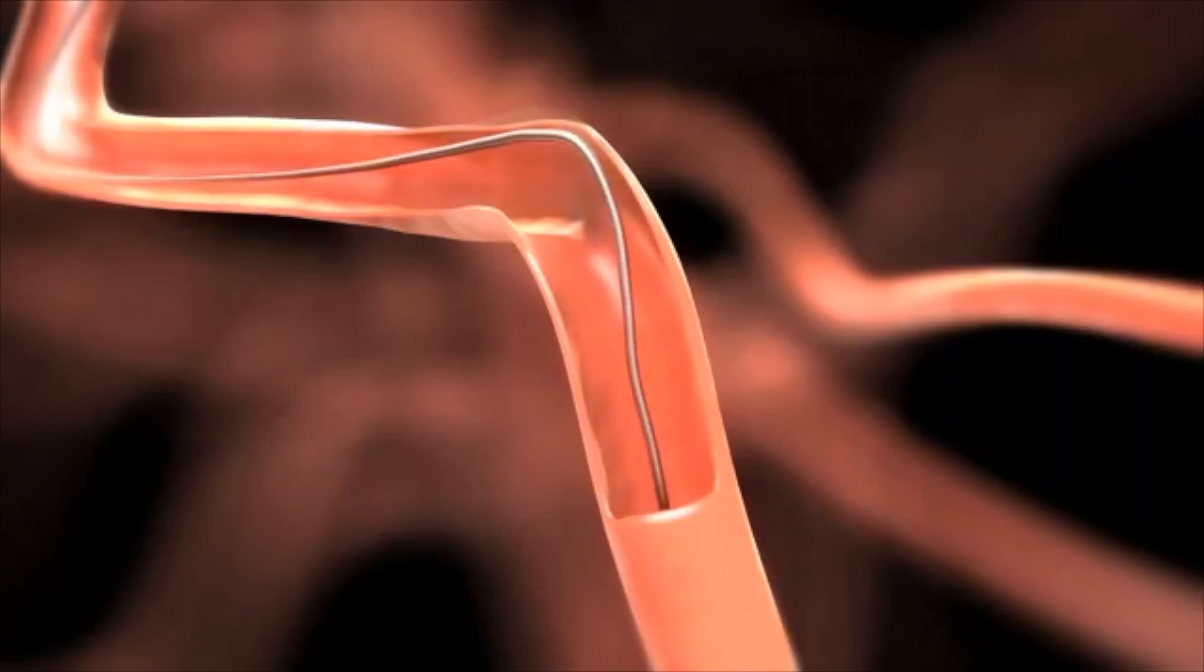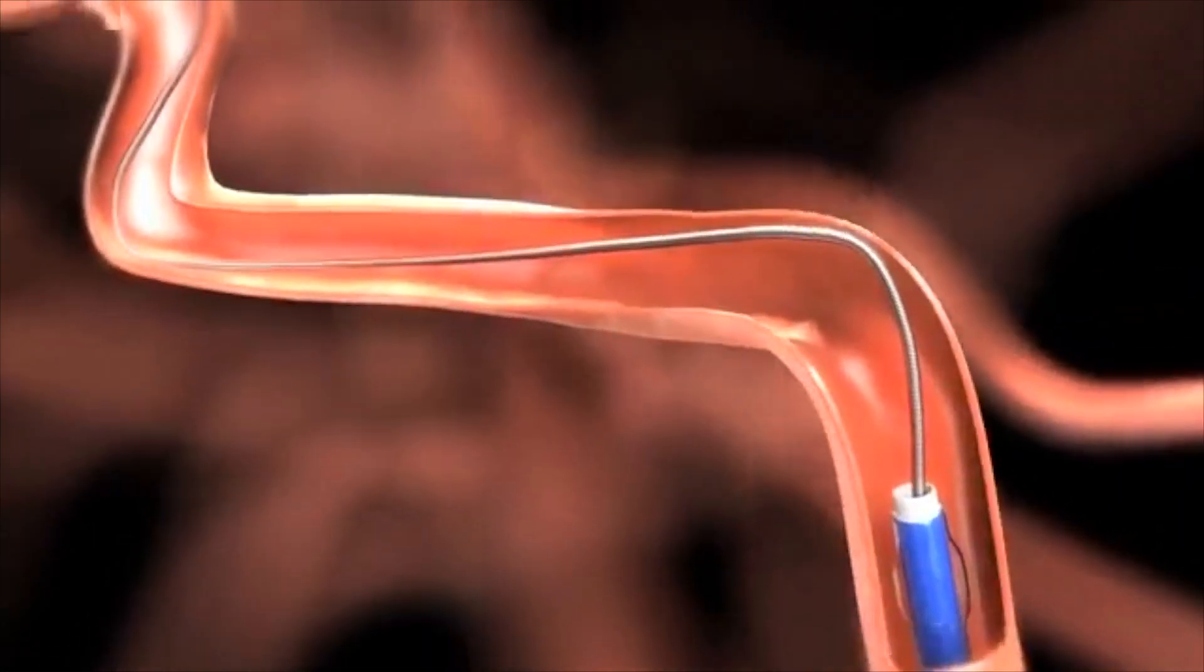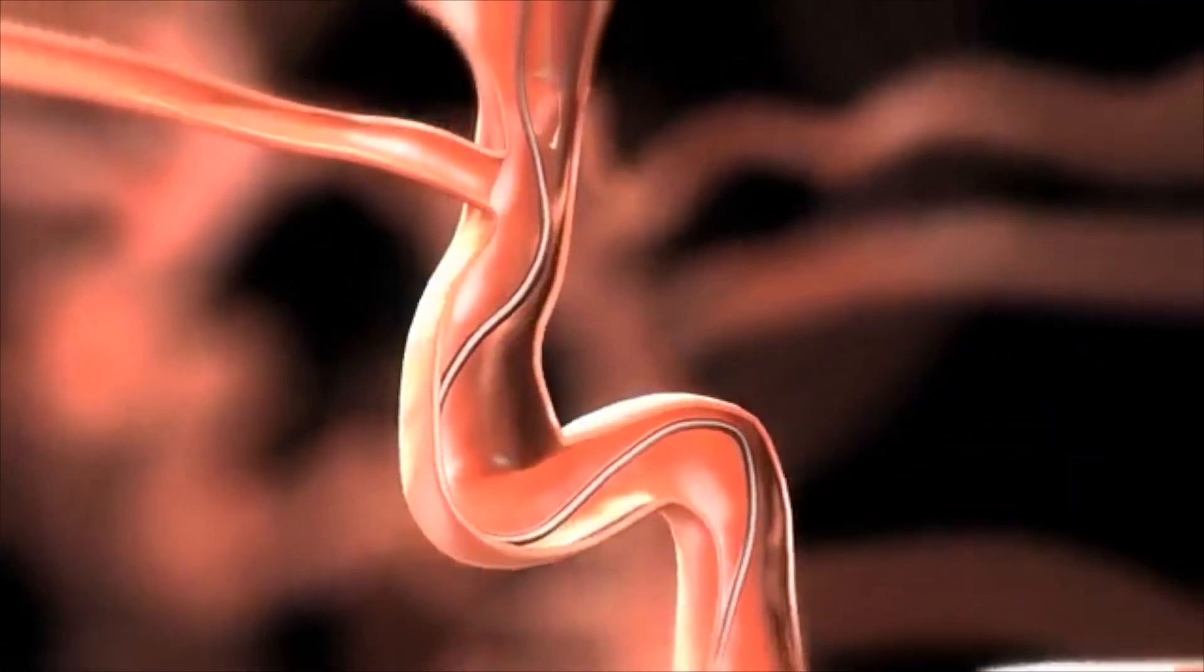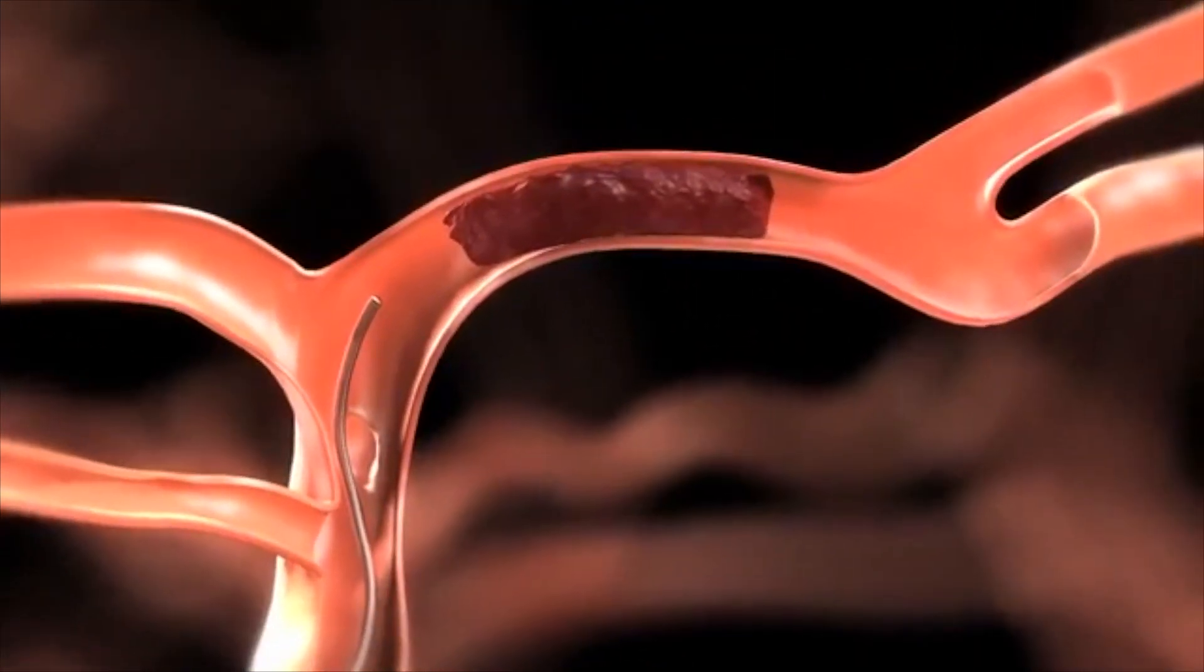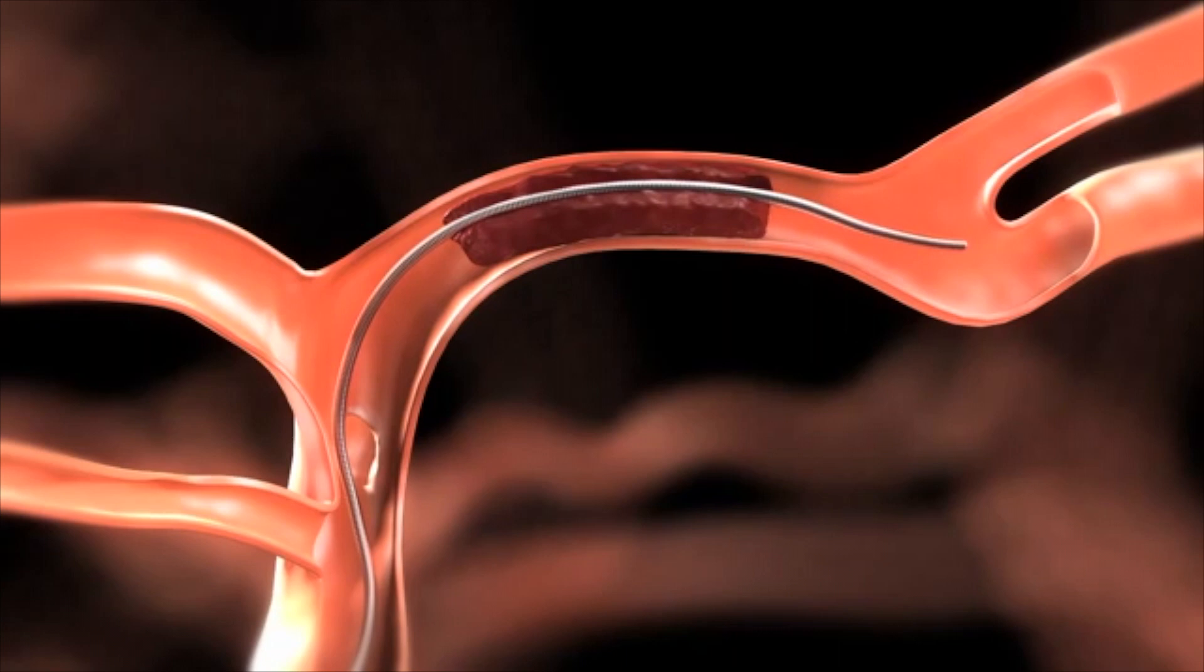Position the balloon guide catheter as close to the thrombus site as possible. Connect a rotating hemostatic valve (RHV) to the fitting of the guide catheter, and then connect the continuous flush.